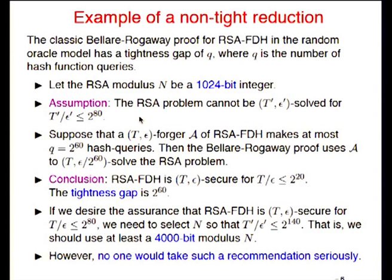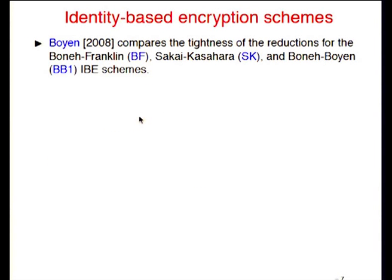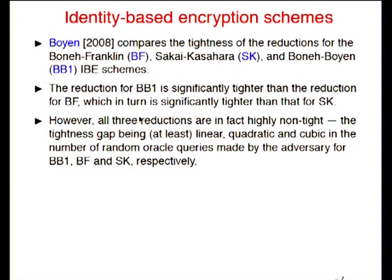In the literature, most proofs are non-tight, and there's no common way of dealing with non-tightness. Boyen, in a survey paper on ID-based encryption, compares the tightness of reductions for Boneh-Franklin, Sakai-Kasahara, and Boneh-Boyen IBE schemes. He notes that the reduction for BB1 is significantly tighter than for Boneh-Franklin, which is tighter than Sakai-Kasahara. But in fact, all three reductions are highly non-tight, with tightness gaps that are linear, quadratic, and cubic in the number of random oracle queries respectively.